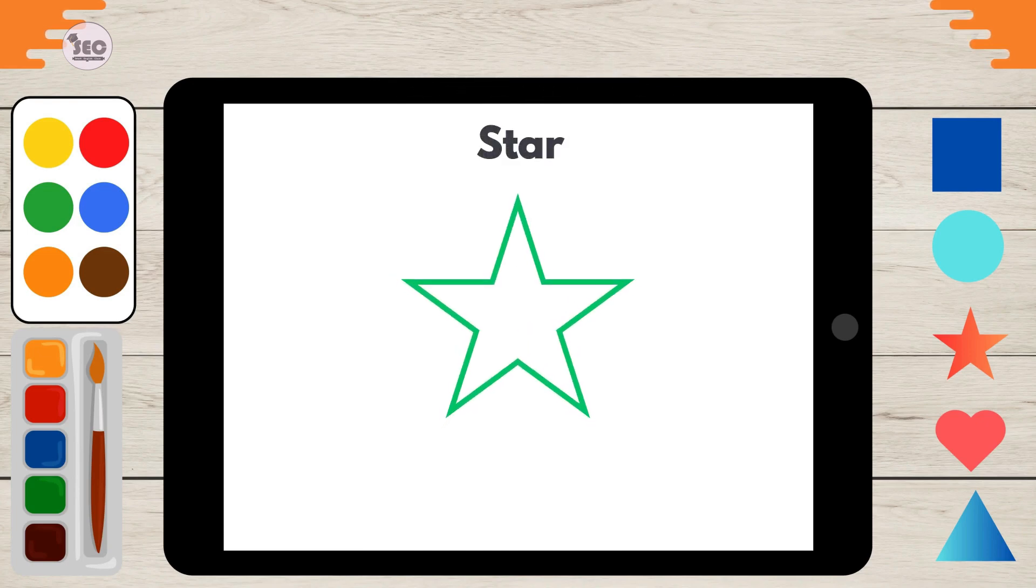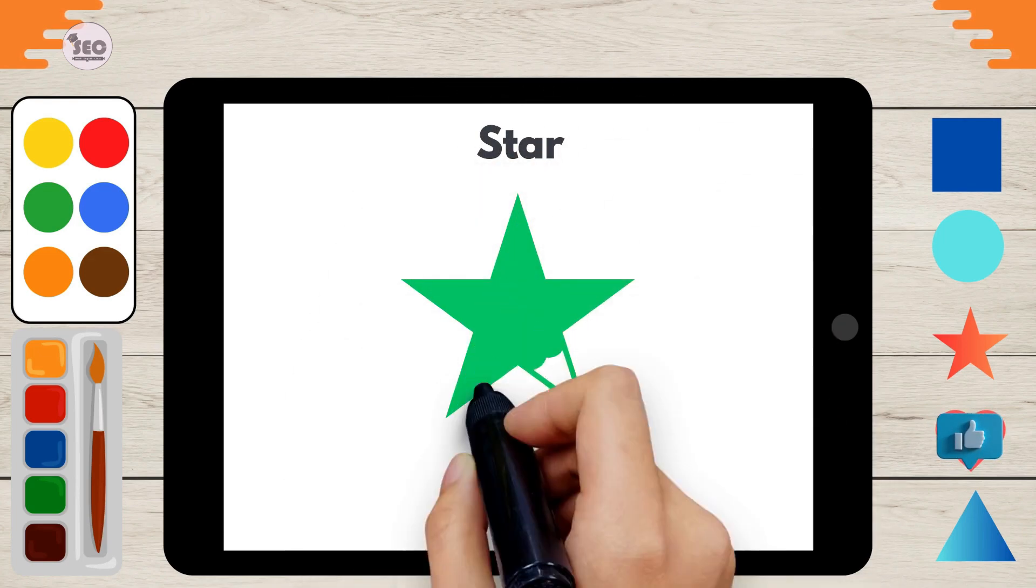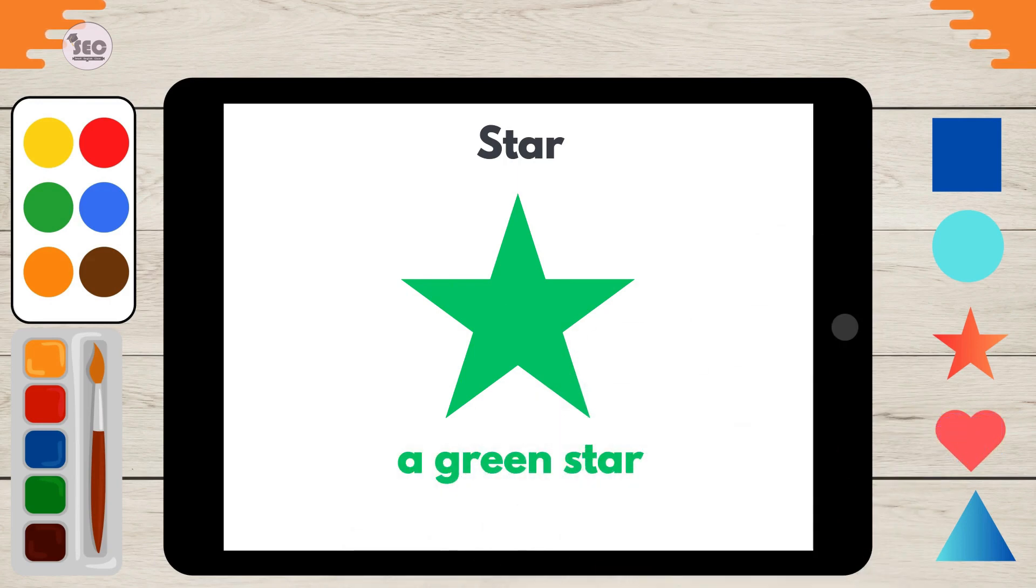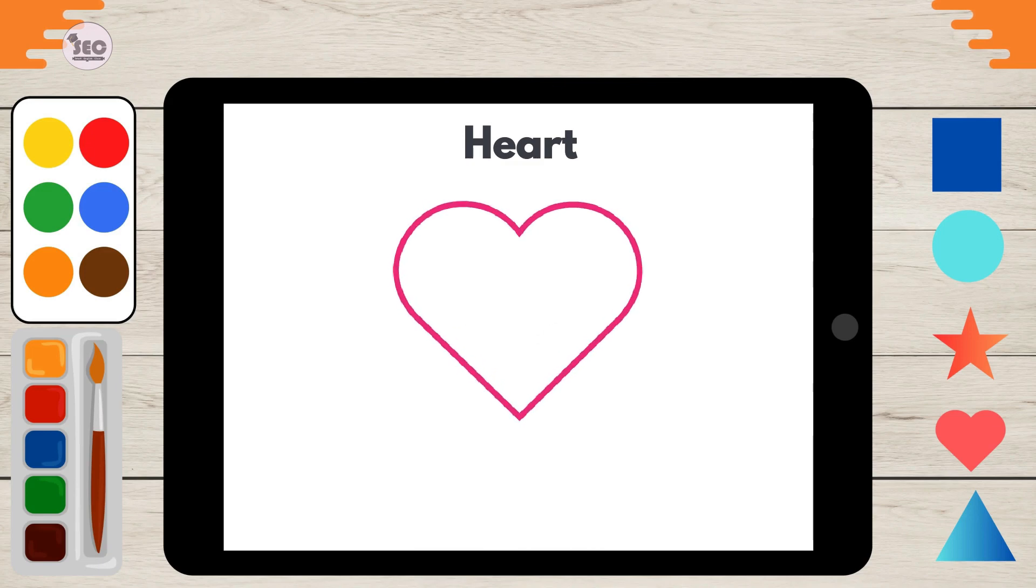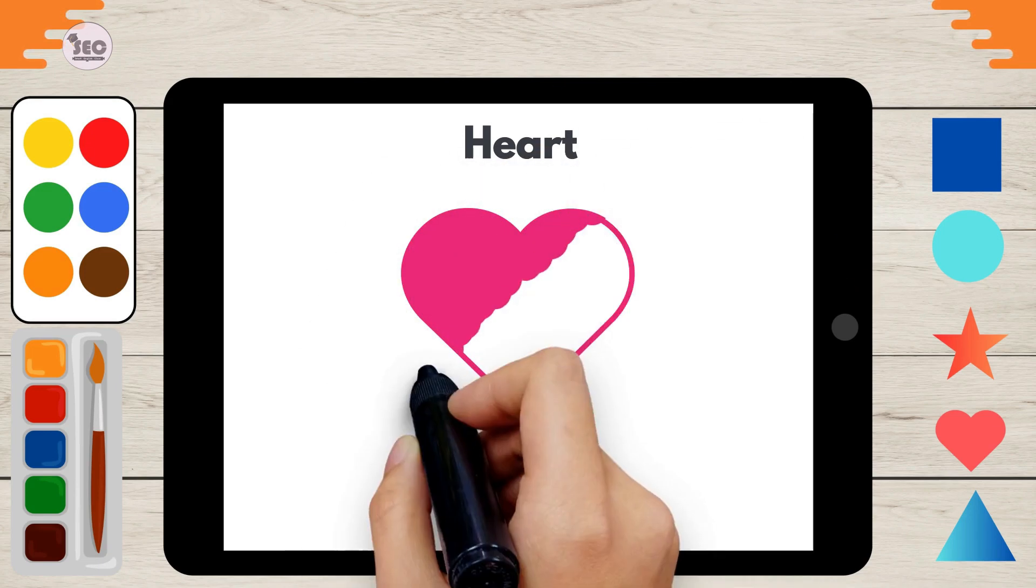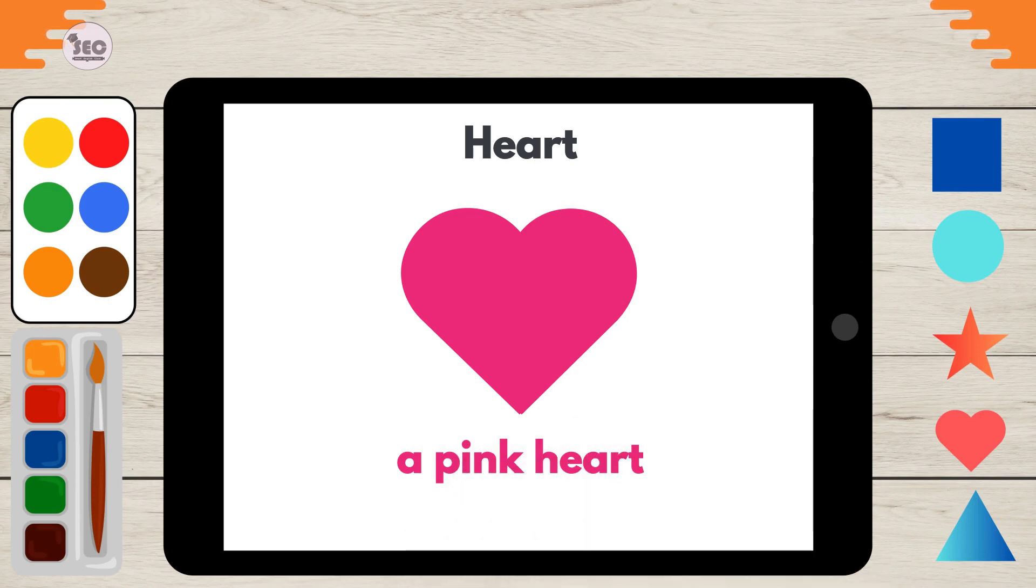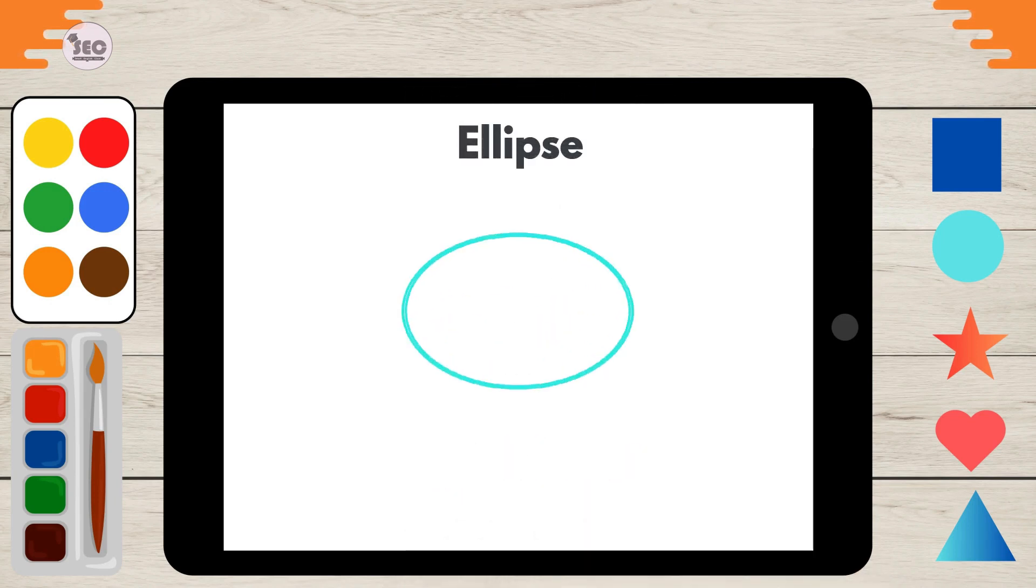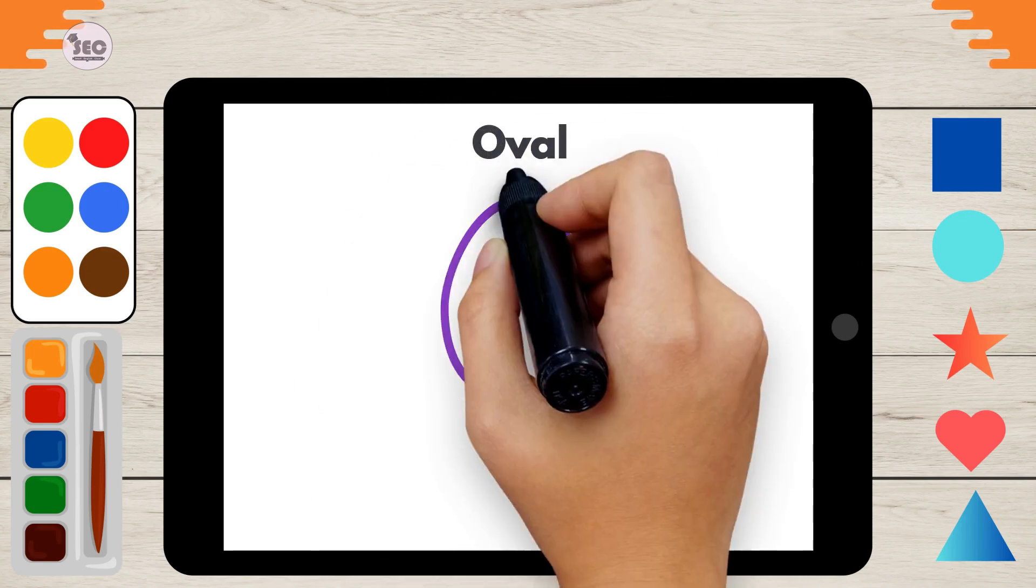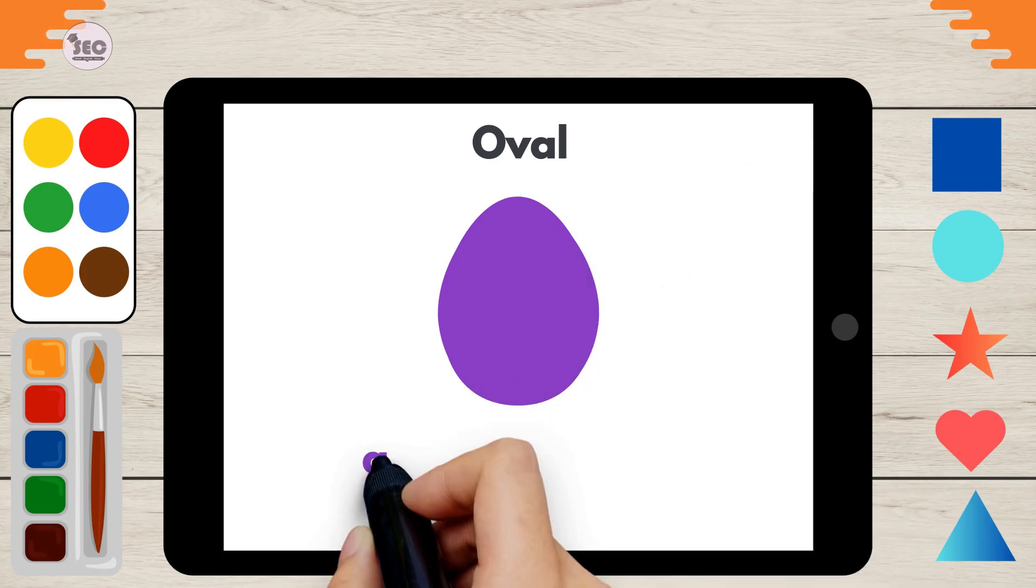Star. A green star. Heart. A pink heart. Ellipse. A cyan ellipse. Oval. A lavender oval.